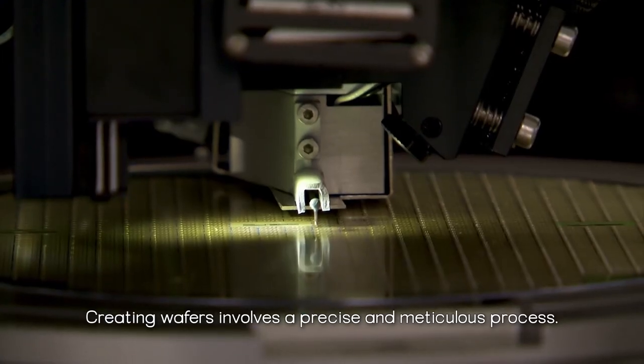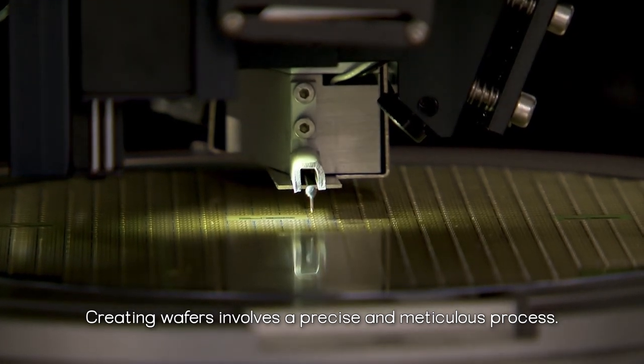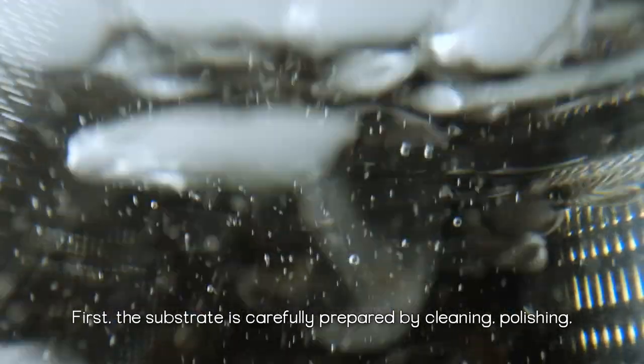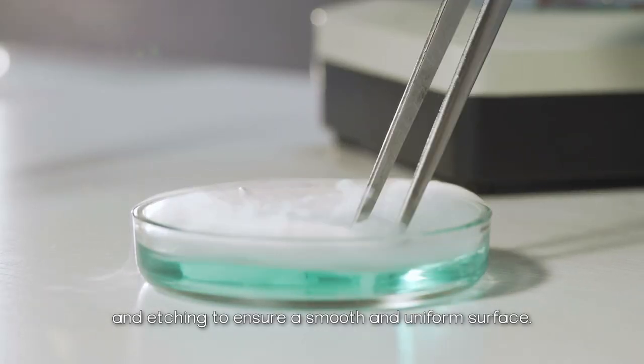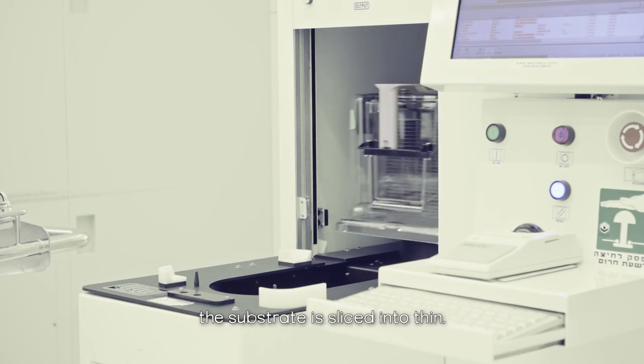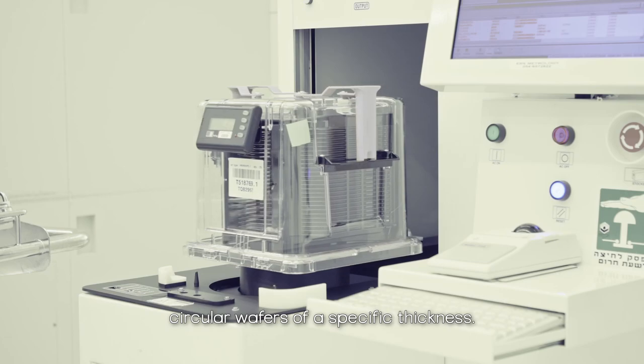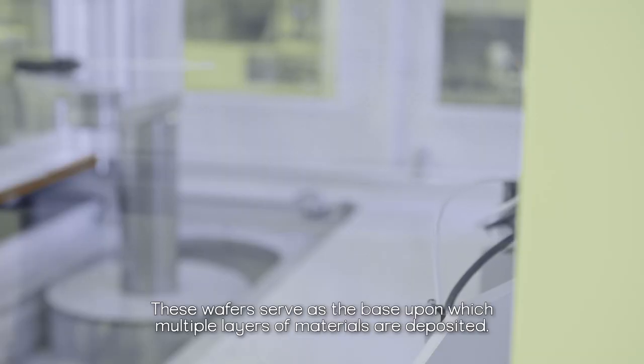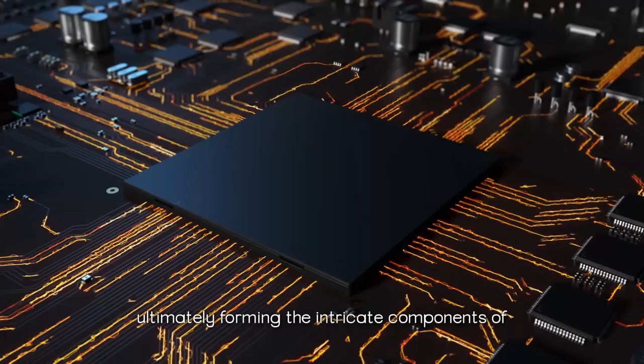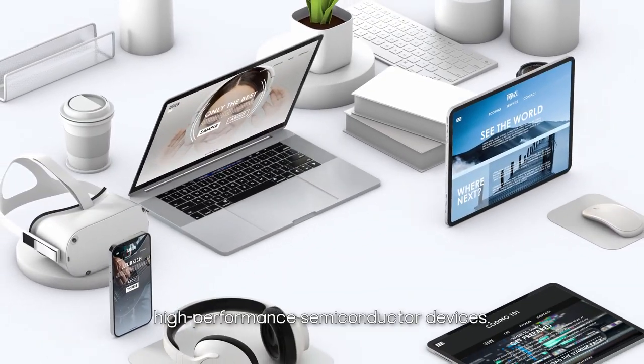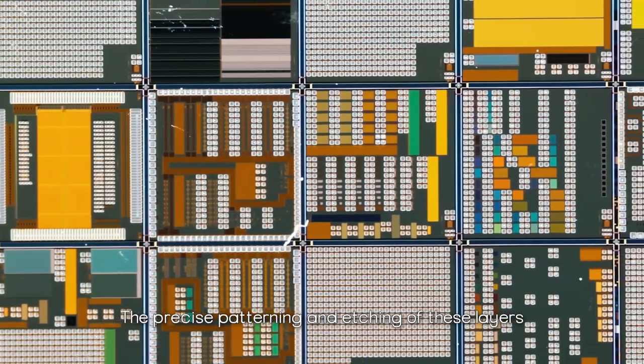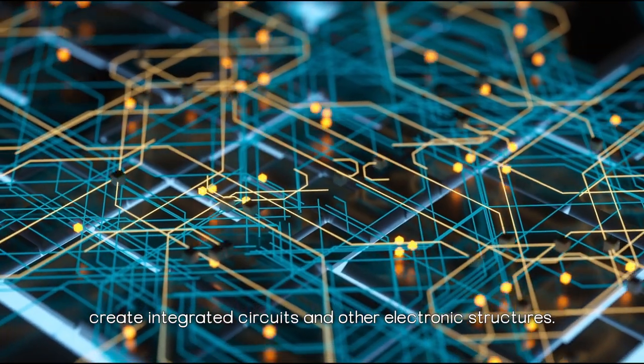Creating wafers involves a precise and meticulous process. First, the substrate is carefully prepared by cleaning, polishing, and etching to ensure a smooth and uniform surface. Then, using specialized cutting tools, the substrate is sliced into thin, circular wafers of a specific thickness. These wafers serve as the base upon which multiple layers of materials are deposited, ultimately forming the intricate components of high-performance semiconductor devices. The precise patterning and etching of these layers create integrated circuits and other electronic structures.